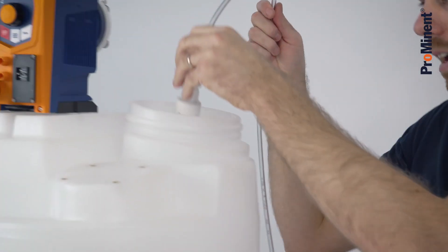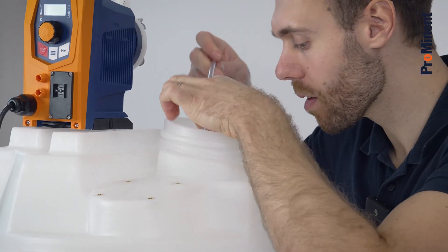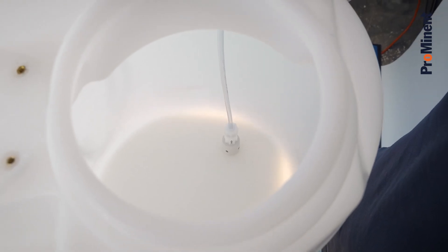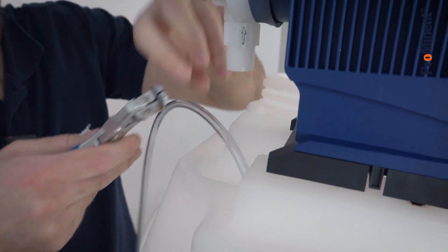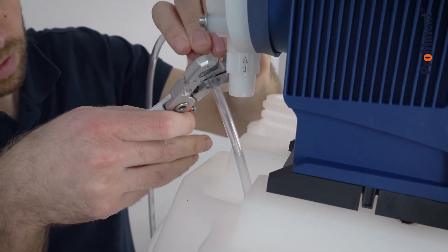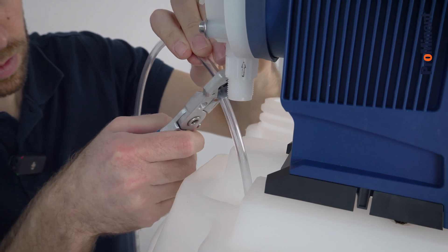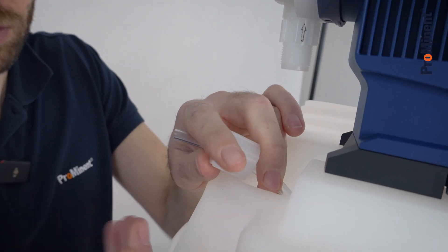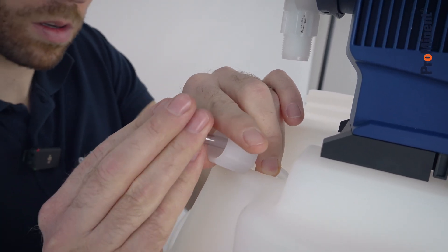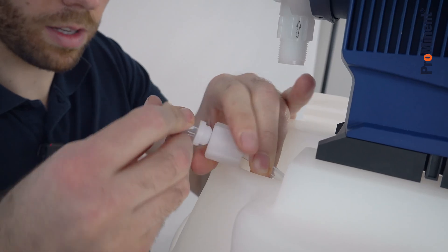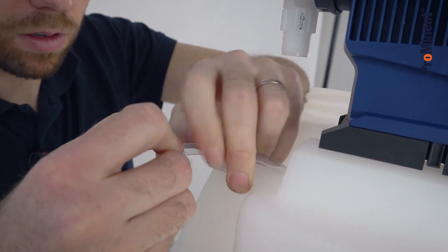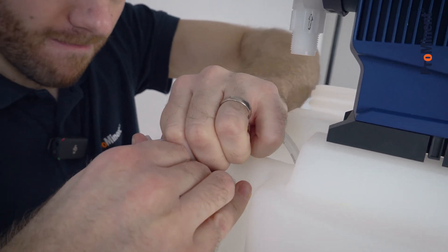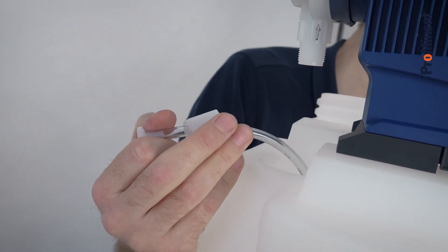Now you put the foot valve in the tank. It must be on the bottom of the tank. Now cut the suction tube to the desired length and connect it to the suction side of the pump. Now last but not least the nozzle. Don't forget the sealing.